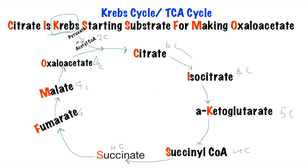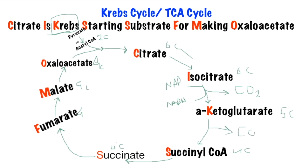Going from 6 carbons to 5 carbons, it is losing 1 carbon in the shape of carbon dioxide. With it, it also loses 1 electron and converts NAD into NADH. Then from 5 carbons to 4 carbons, again it will lose 1 carbon dioxide and produce NAD to NADH.